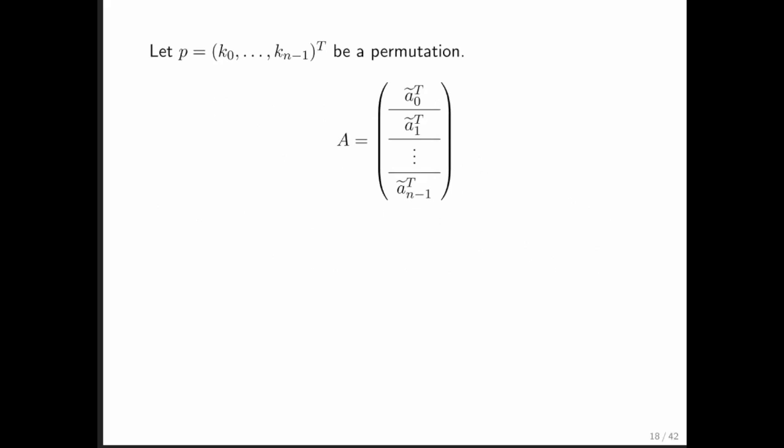Similarly, you can look and see what happens when you apply a permutation matrix to a matrix A. If we start by partitioning the matrix into rows, then if we apply the permutation matrix to it, then we get this right here.